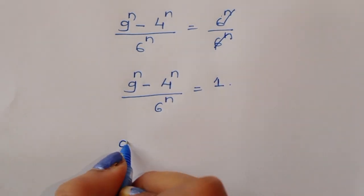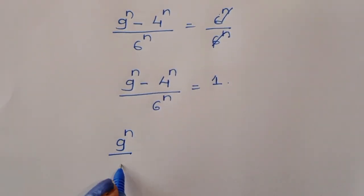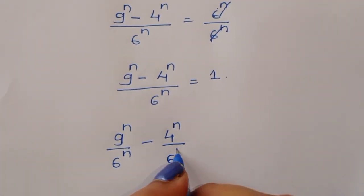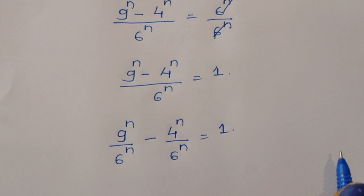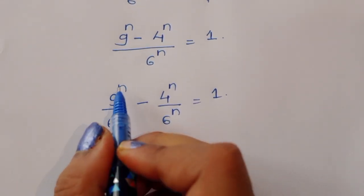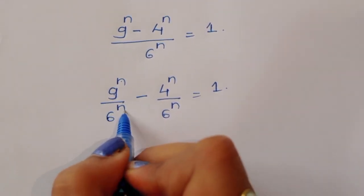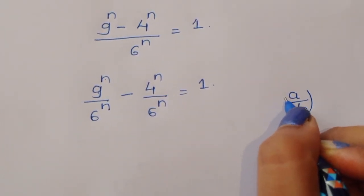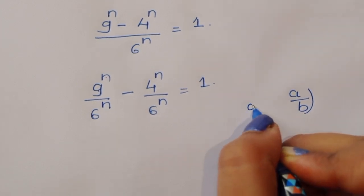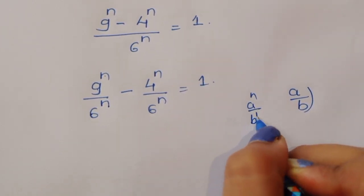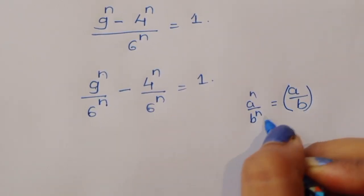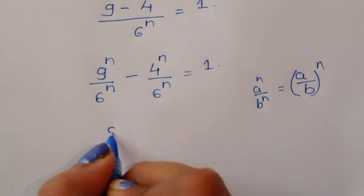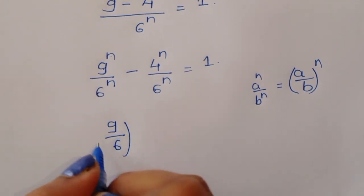So 9 power n divided by 6 power n minus 4 power n divided by 6 power n is equal to 1. Now we know the formula: a power n upon b power n equals (a upon b) power n. Using this formula, since the power is the same, we get (9 upon 6) power n minus (4 upon 6) power n is equal to 1.